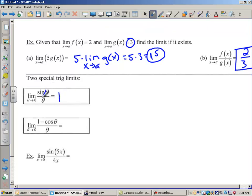As long as these two things match and it's approaching 0, this answer will be 1. For example, sine of 7x over 7x, as long as x is approaching 0, this answer will be 1.